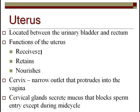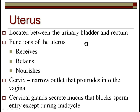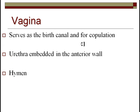The uterus has three functions: receive, retain, and nourish. It is meant to hold the fertilized egg and allow it to grow into a child over approximately 266 days. It has great expansion capabilities. The opening into the uterus is the cervix, which typically keeps the entry blocked with mucus — except during mid-cycle ovulation, when it is open and ready for sperm. The vagina has two functions: copulation and serving as the birth canal.